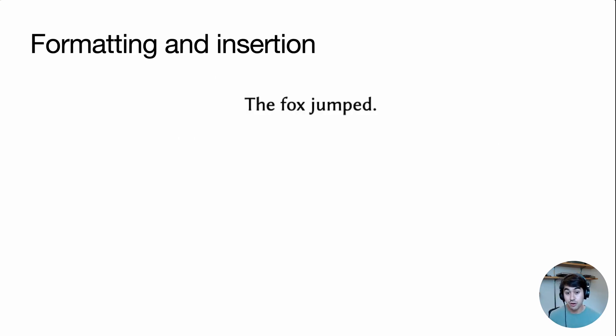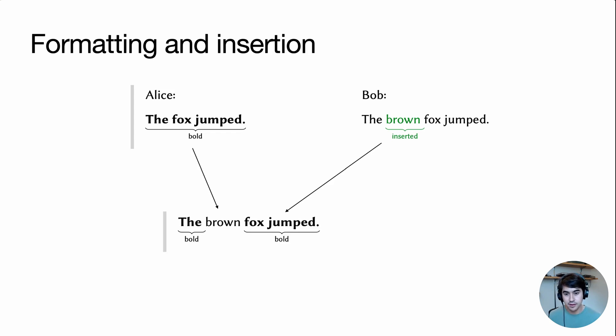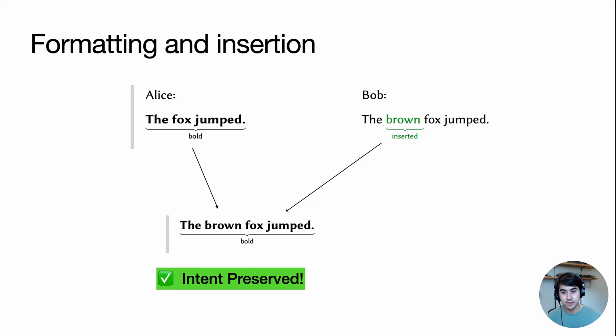A key contribution of our work in Paratext is extending these ideas of intent preservation properties from plain text to rich text with formatting. For example, consider this sentence from before, and this time Alice bolds the entire sentence and Bob inserts the word brown. What should happen when these two results merge together? You might say that we should end up with something like this, where the words that Alice bolded have become bold and the newly inserted word is not bold. But this seems like a sort of strange result because it seems like Alice's intention wasn't to bold those individual words, it was to bold the entire sentence. A better result might be something like this, where the entire sentence, including the newly inserted word, has been bolded. And this is the result that we propose as intent preserving in our work.